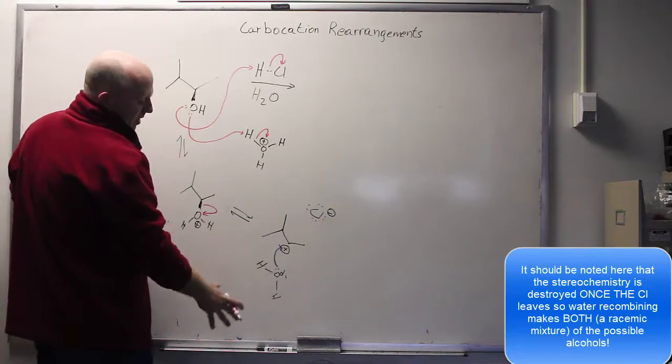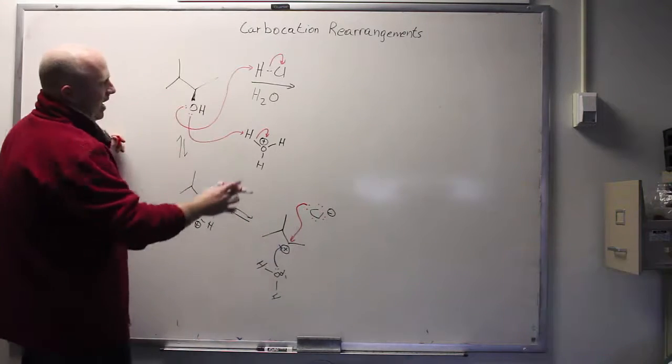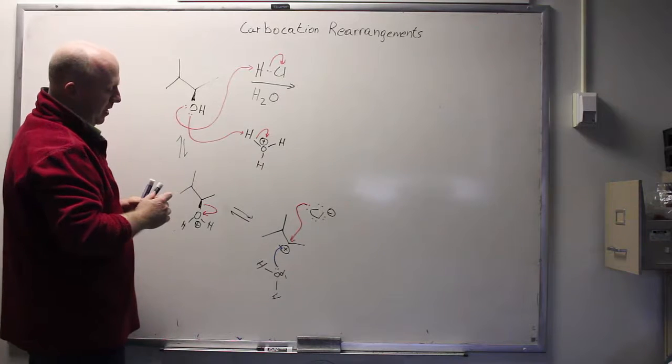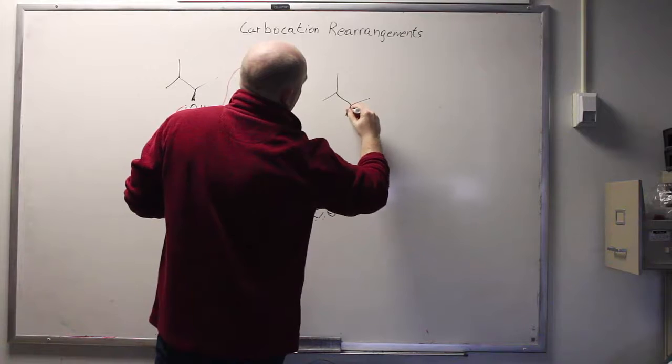The water might win because we have a lot of it—it's the solvent. The chloride might win because it's a better nucleophile, and if we make a relatively concentrated solution of Cl⁻, then it might attack. So the product of this reaction would be both enantiomers of the chloride.